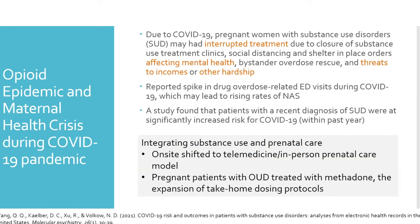There is an important intersection between the opioid epidemic and the maternal health crisis during COVID-19. Emerging literature indicates that pregnant women with substance use disorder may have experienced interrupted treatment due to clinic closures, social distancing, and sheltering in place. Social distancing also affected mental health, bystander overdose rescue, and income stability. Multiple social risks impacted pregnant women more severely during this time, and there were reported spikes in drug overdose-related emergency department visits during COVID, which may lead to rising rates of NAS.